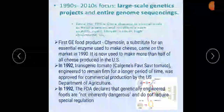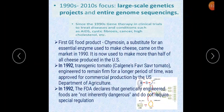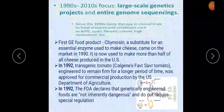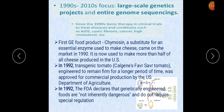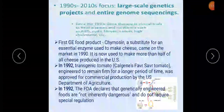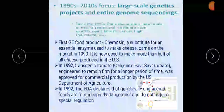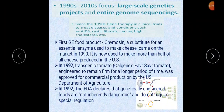In the 1990s and 2010, the main focus was on large-scale genetics projects and entire genome sequencing. Since the 1990s, gene therapy in clinical trials to treat diseases and conditions such as AIDS, cystic fibrosis, cancer, and high cholesterol was developed. The first genetically engineered food product — chymosin, a substitute for the enzyme used to make cheese — came to market in 1990.